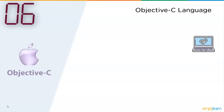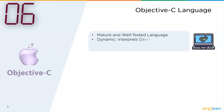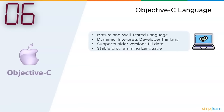The major advantages Objective-C had to offer: it is a mature and well-tested programming language that has existed for a long period of time for Apple developers. It is a dynamic programming language that interprets developer thinking, it supports older versions to date, and it is a stable programming language.